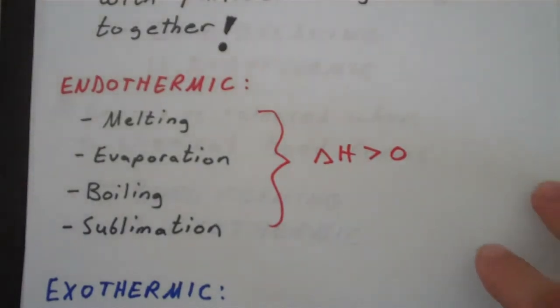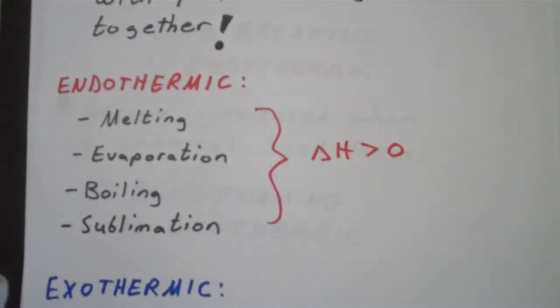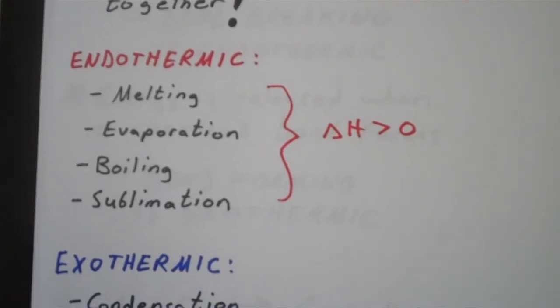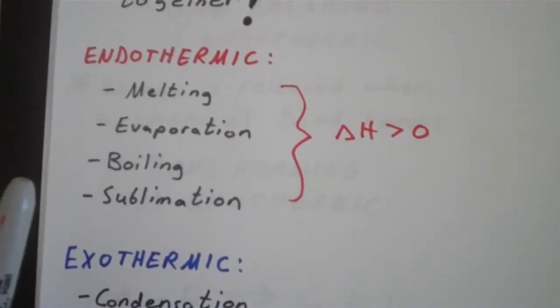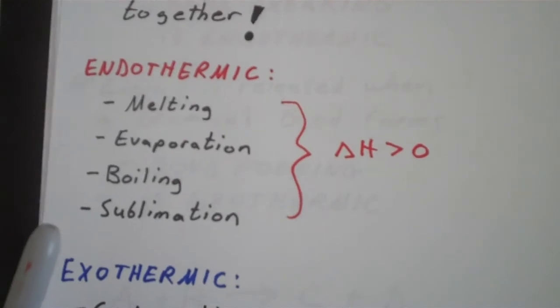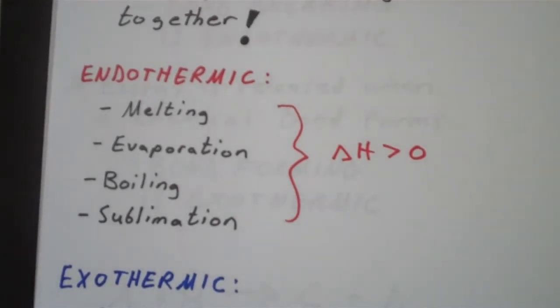An exothermic physical process is one in which the molecules are actually becoming closer together. They're going from a state in which they're far apart to a state in which they're closer together.